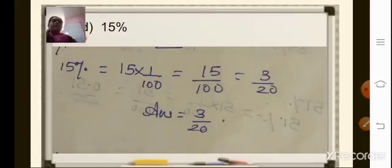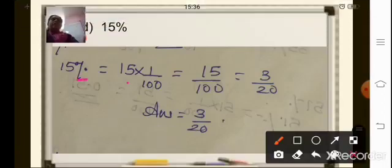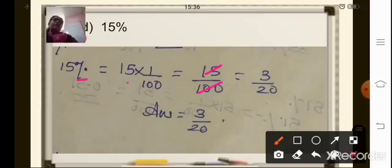The second sum is 15 percent. Again, remove the percent sign: 15 into 1 upon 100 gives 15 upon 100. You can further reduce it because 15 and 100 are divisible by 5. So 5 times 3 is 15, and 5 times 20 is 100. Your final answer is 3 upon 20.